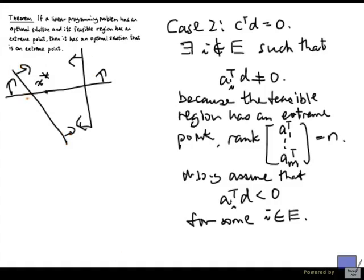And this d is saying that, well, there is a direction that we can move from x-star to hit another inequality. And so, using this observation, the fact that a_i transpose d is less than 0 for some i not in E, so this should be not in E.